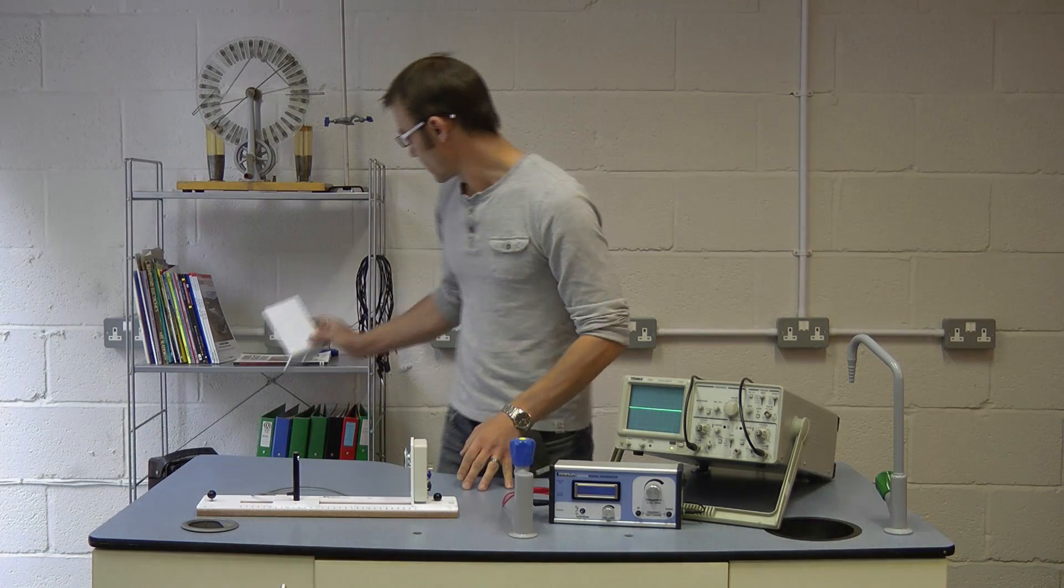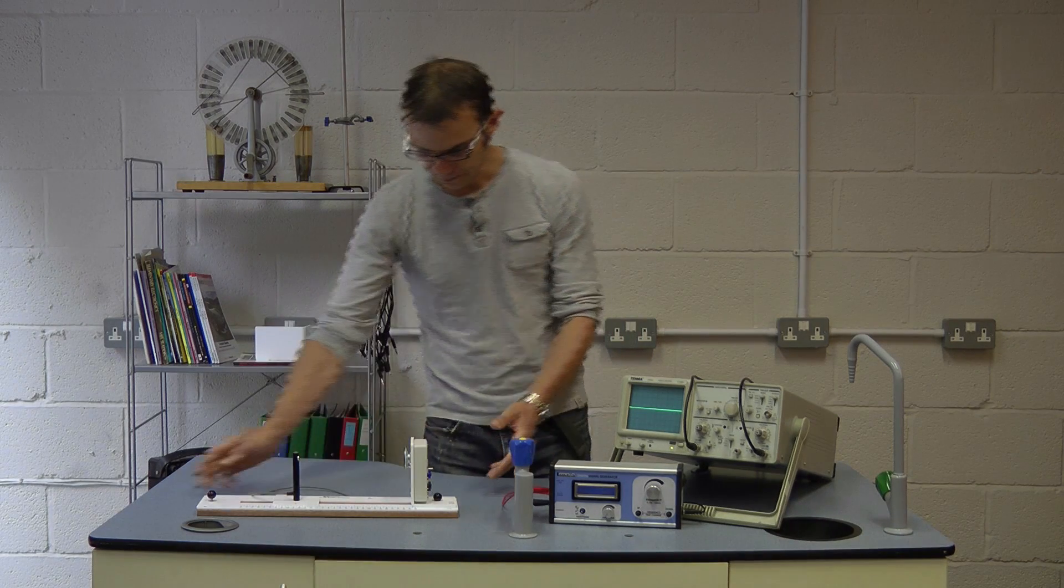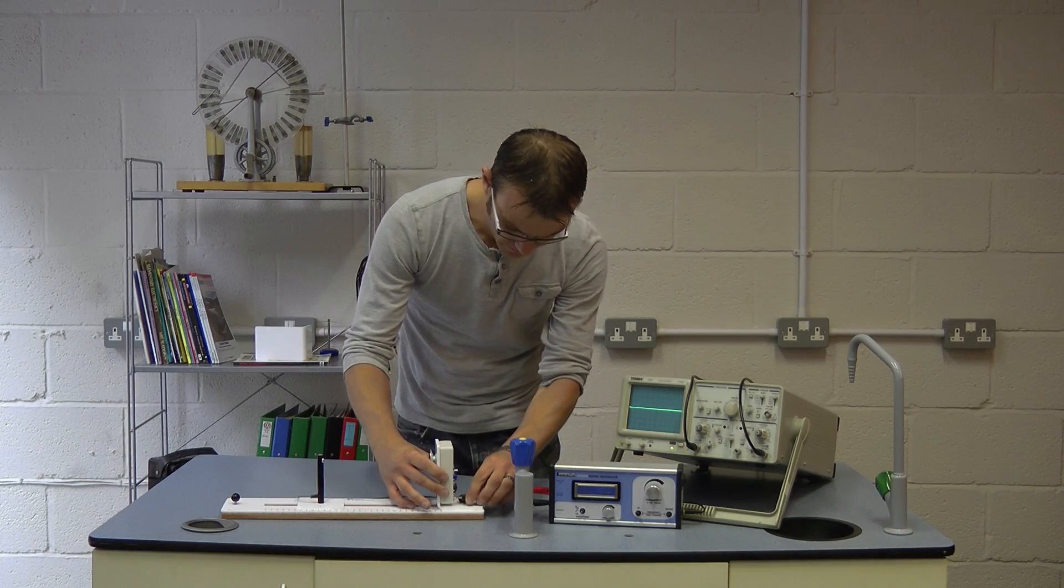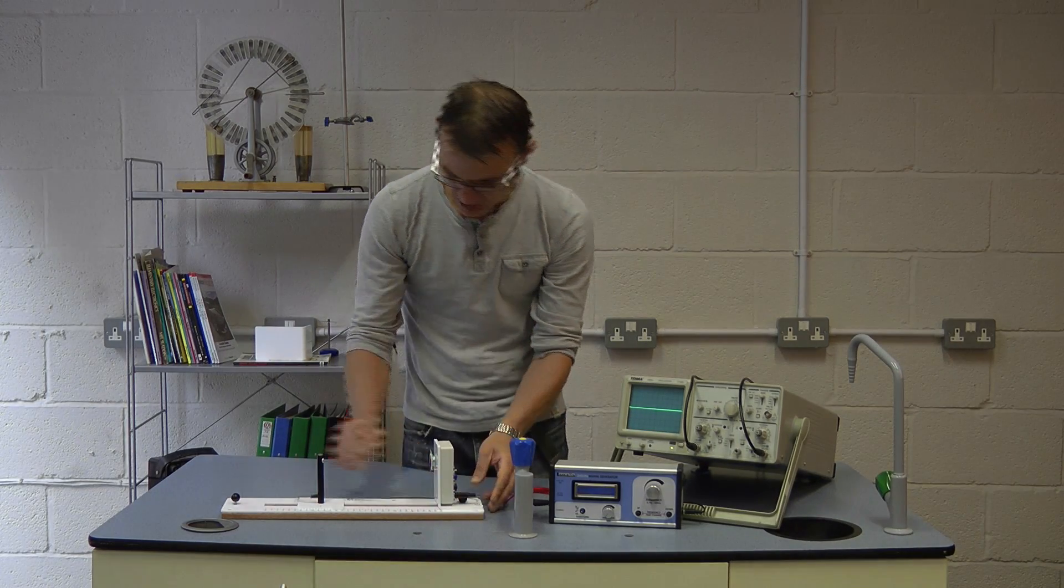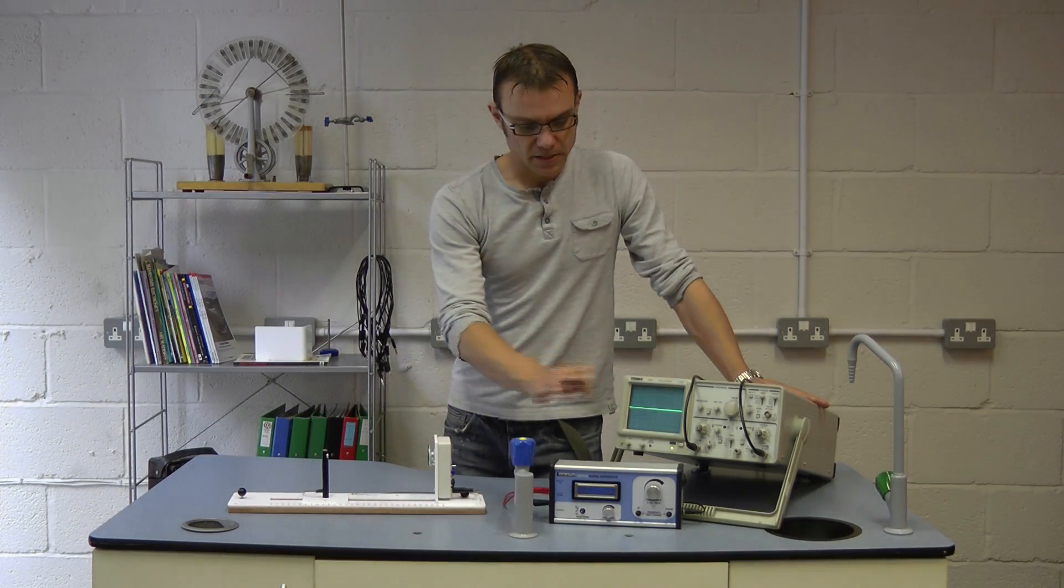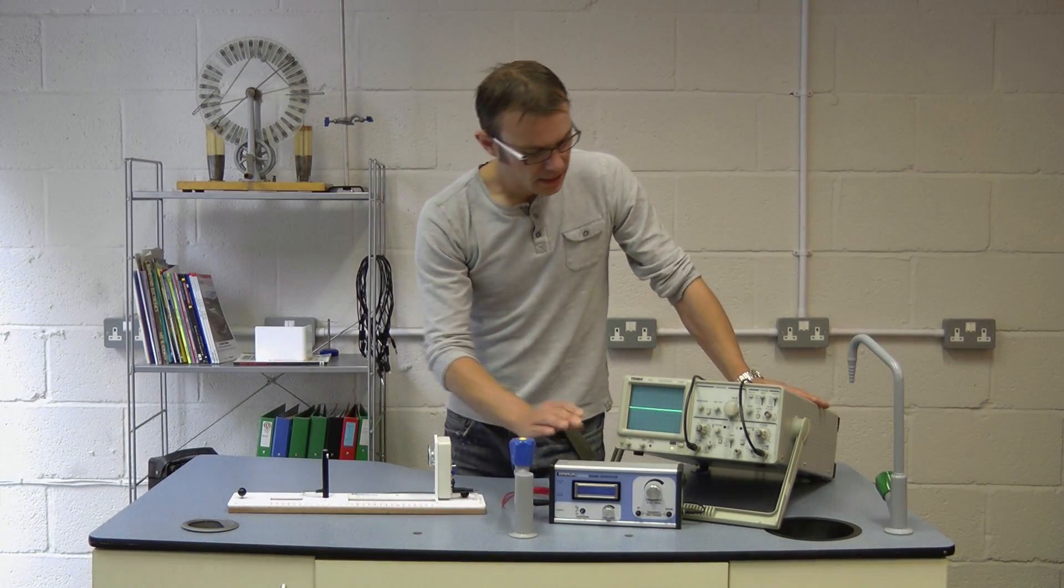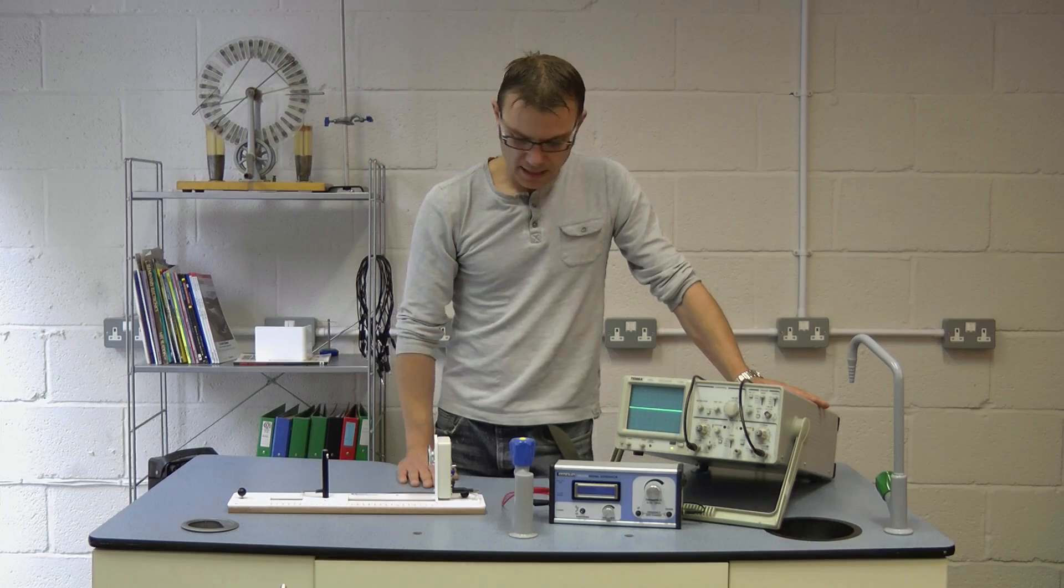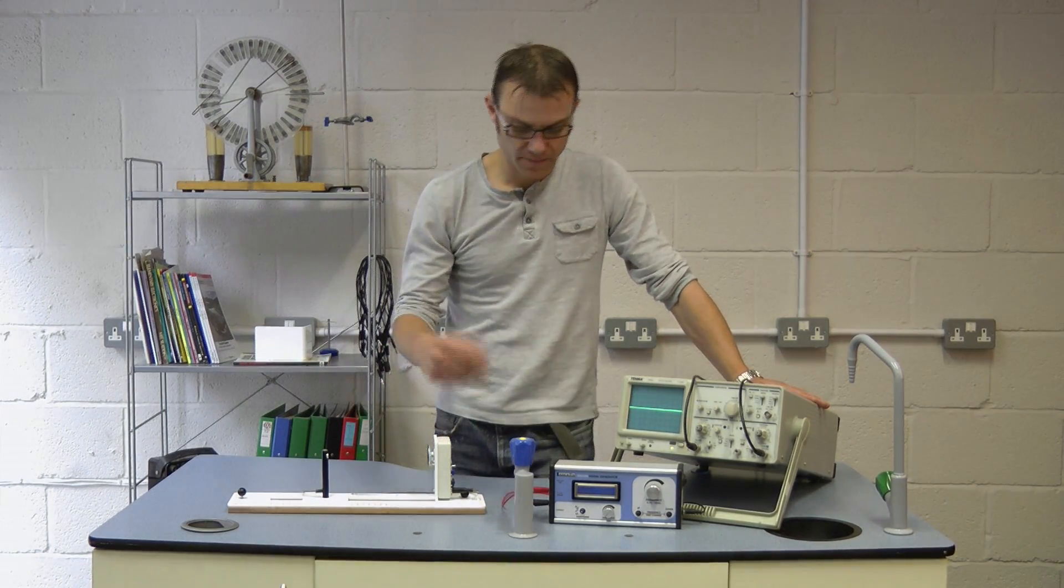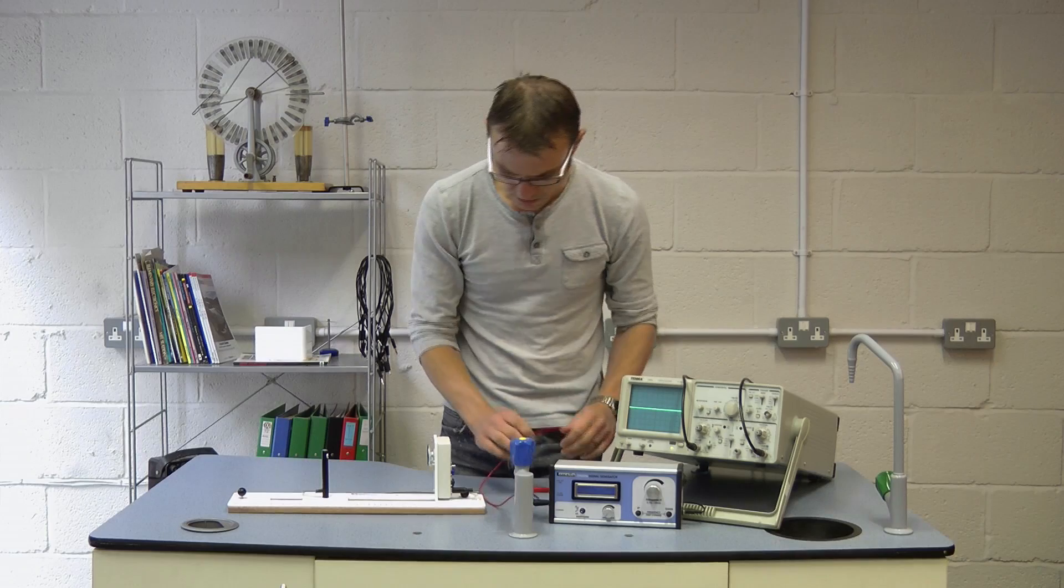Firstly we won't need this base back so we'll just remove that for now and we'll connect our microphone to the transmitter. Now for this to work you're going to require a signal generator and a dual beam oscilloscope. We're going to use the signal generator to apply a signal to the transmitter which will generate the sound.